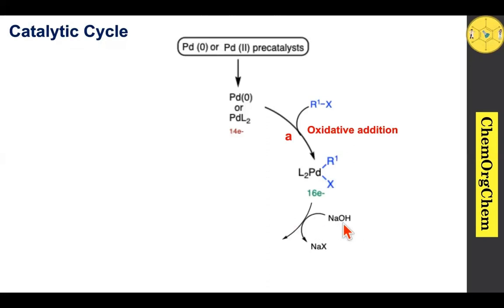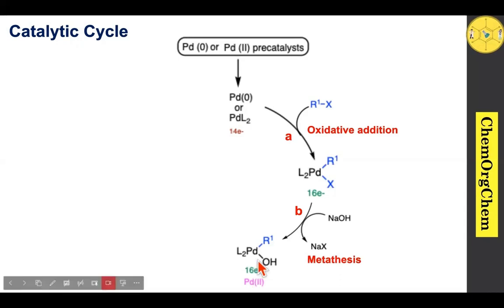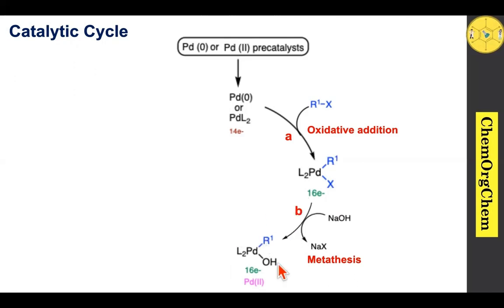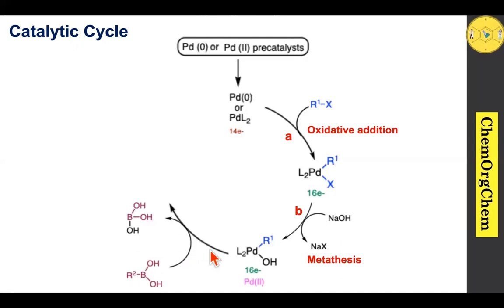After oxidative addition, the palladium species readily undergoes metathesis with base. Sodium hydroxide readily replaces the halogen group, producing the corresponding sodium halide along with a palladium(II) hydroxide species. The hydroxide ion replaces the halogen — that is, ligand X exchange takes place — to produce the corresponding palladium species, which then readily undergoes transmetalation with the organoboronic acid.